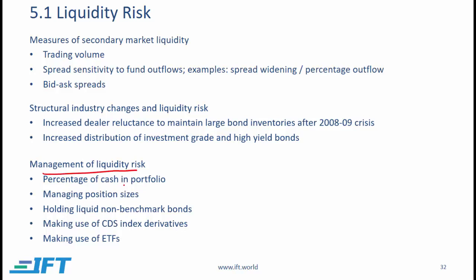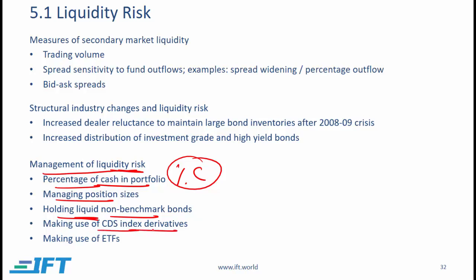Management of liquidity risk involves several tools. One is simply the percentage of cash in the portfolio — given increased liquidity concerns, several fund managers have increased their cash allocation. Another tool is managing position sizes: fund managers can hold larger positions in more liquid bonds, and may also hold liquid non-benchmark bonds, deviating from the benchmark to hold more liquid bonds and make the portfolio more liquid. Another method is to use CDX index derivatives.